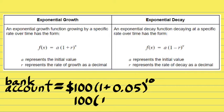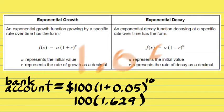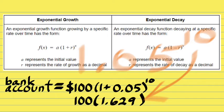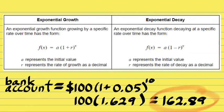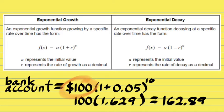Let's say you invest your money for 10 years. Simplifying: 1 plus 0.05 is 1.05, raised to the power of 10 gives 1.629. Then 1.629 times 100 gives $162.89. After 10 years of investing $100 at 5% interest, you would have $162.89 — that's exponential growth. The amount of money started at $100 and grew to $162 because we are adding a percent return every year.